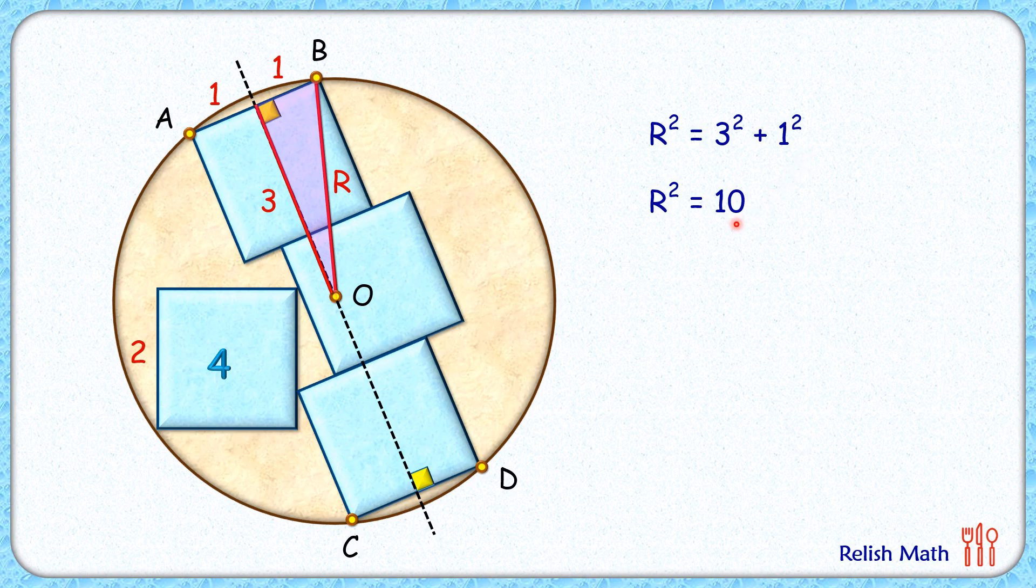And area of this brown circle, which is given by pi r square, so this area will be ten pi centimeter square, and in decimal form it will be 31.4 centimeter square, and that's our answer.